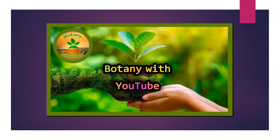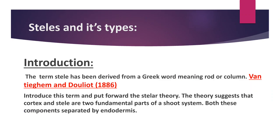Assalamu alaikum, welcome to our channel Botany with YouTube. Today, as a PhD scholar, I am going to present a topic: steles and its types. Water circulates in the plant with the help of vascular bundles — xylem moves water throughout the plant, and phloem transfers nutrients and food material from leaf to other parts. Xylem and phloem collectively are called the stele, meaning vascular bundles. The term stele is derived from a Greek word meaning rod or column.